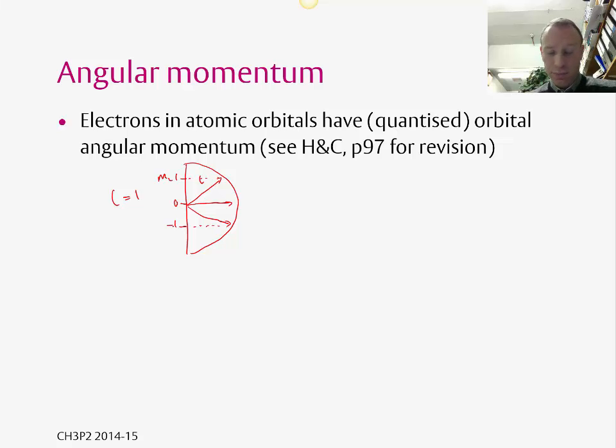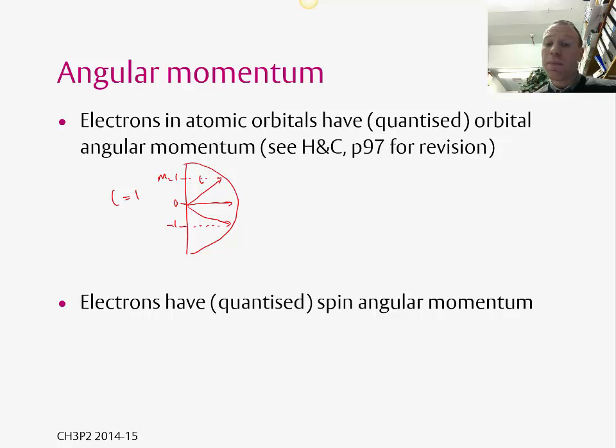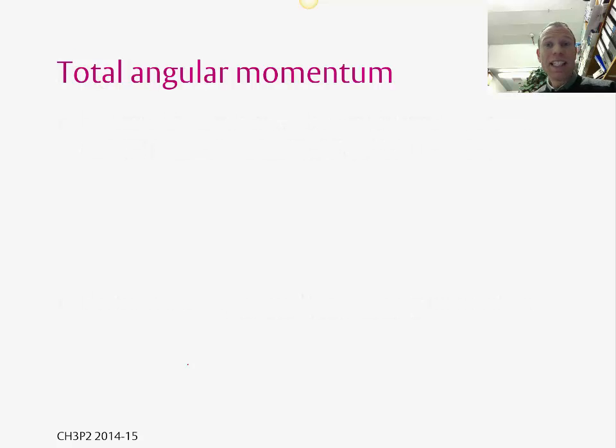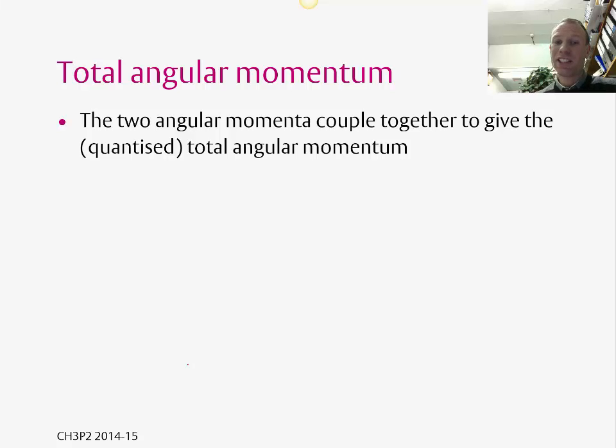Well, electrons also have spin angular momentum. We think of an electron as spinning. And this angular momentum is then quantized in the same way. And you can actually draw again a similar diagram. So you have your semicircle. This is the length of the spin vector. And if you did now, this axis here is MS. And this is plus a half and this is minus a half. So we've got these two forms of angular momentum. But that doesn't stop there. These two angular momenta, the orbital angular momentum and the spin angular momentum, actually couple together to give the quantized total angular momentum.